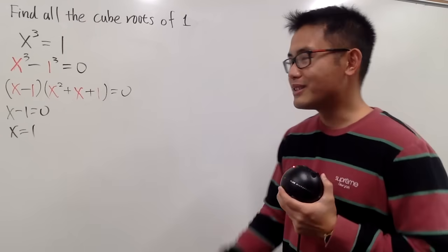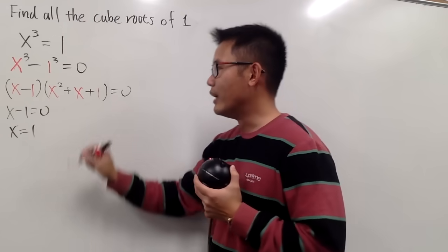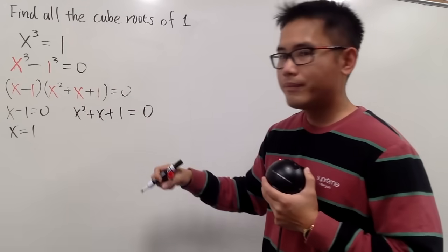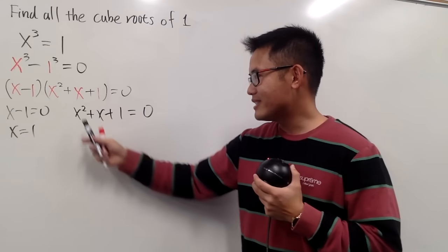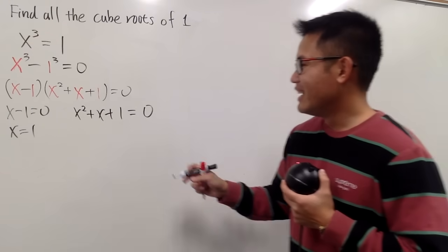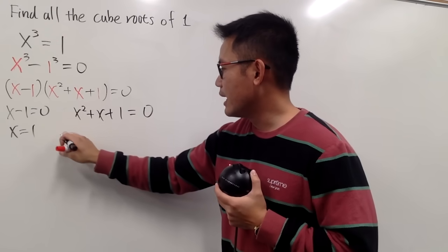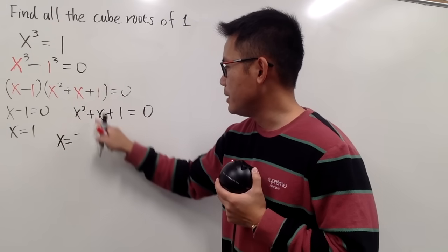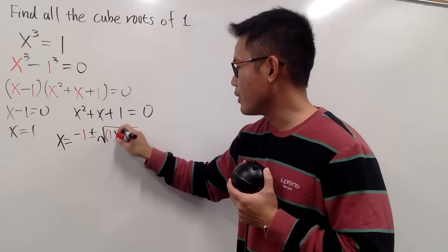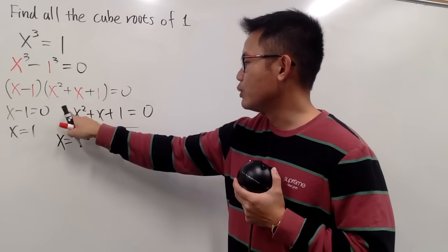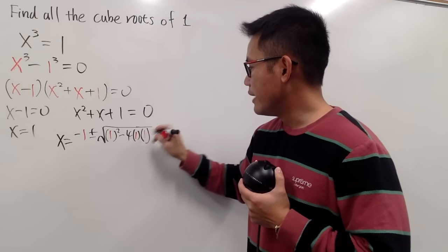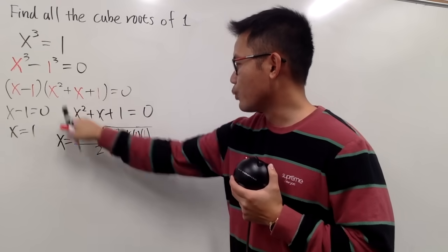To find the complex answers, I will make x squared plus x plus 1 equal to 0. To solve this, let's use the quadratic formula. Notice that the a, b, c values are all equal to 1. So x is equal to negative b, which is 1, plus or minus the square root of b squared, which is 1 squared, minus 4 times a times c, which is 4 times 1 times 1, all over 2 times 1.